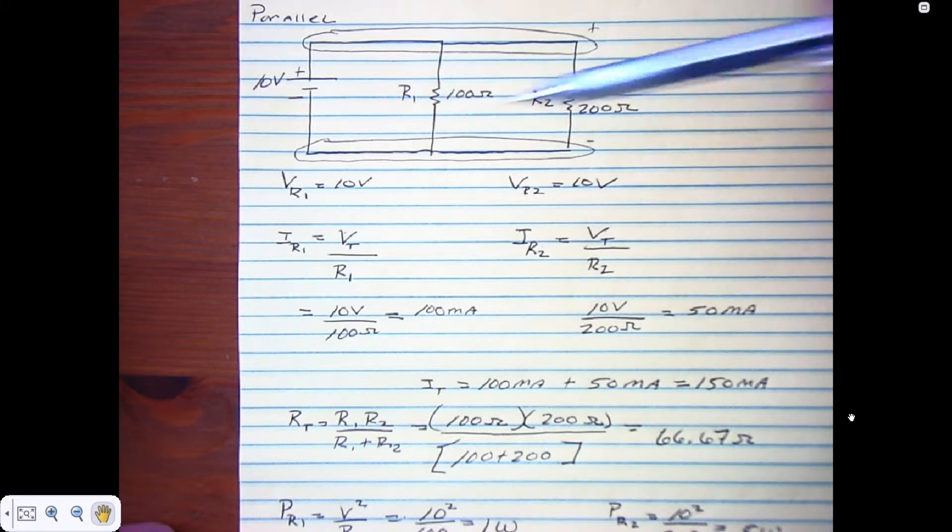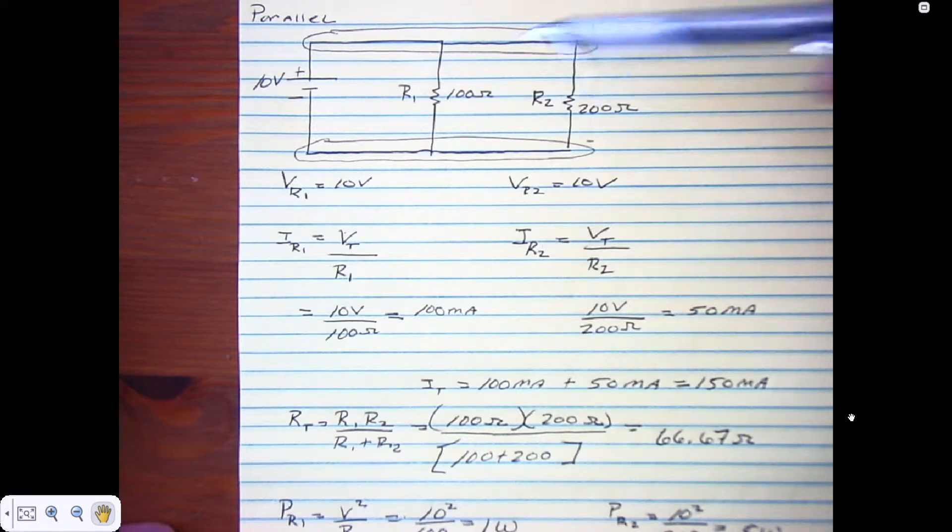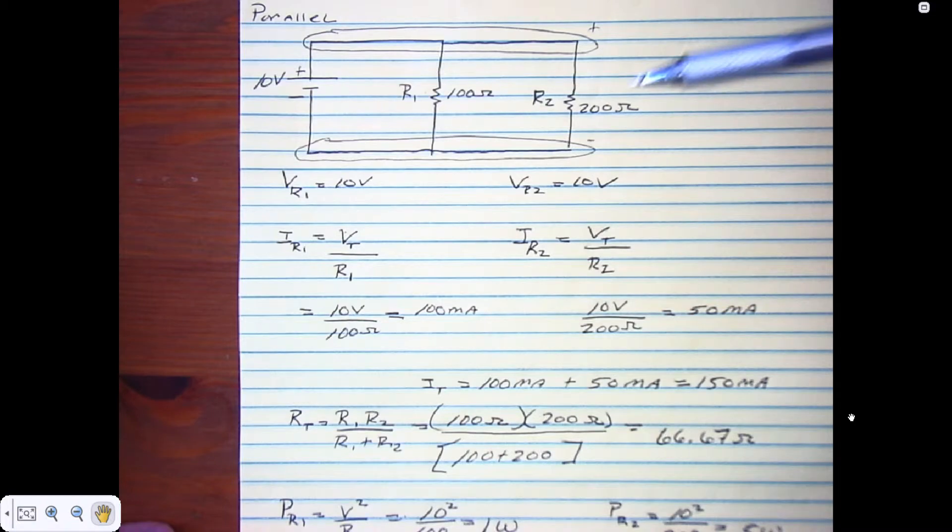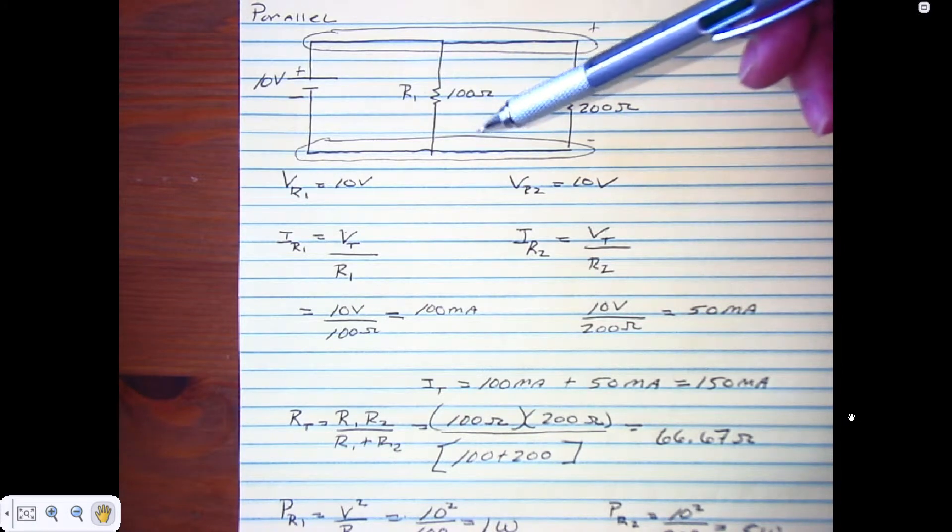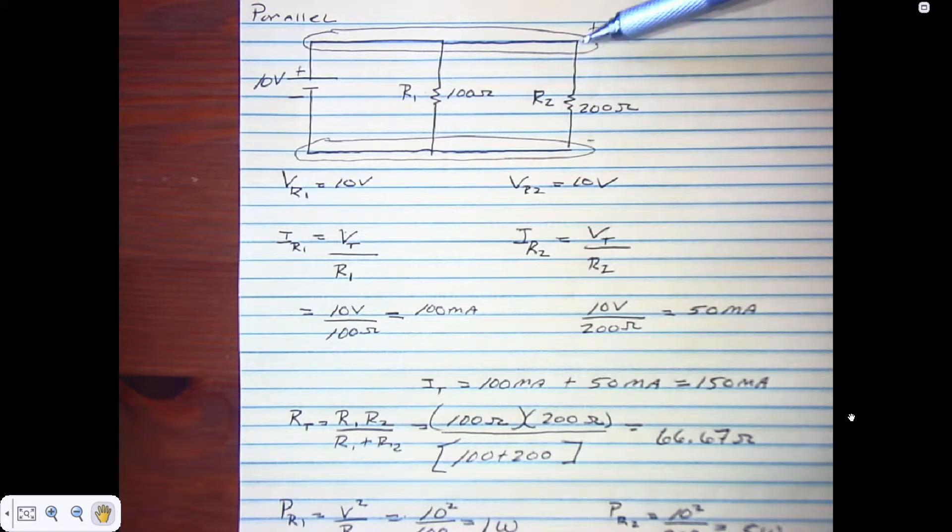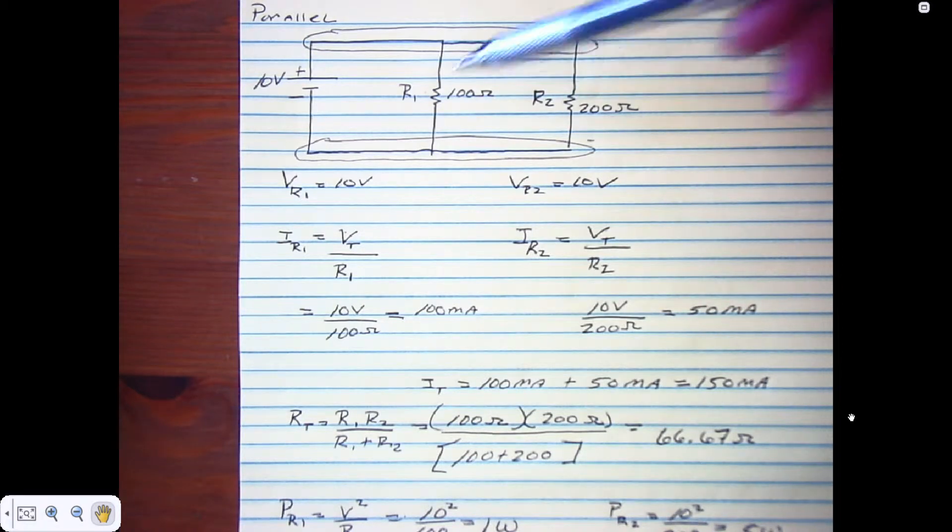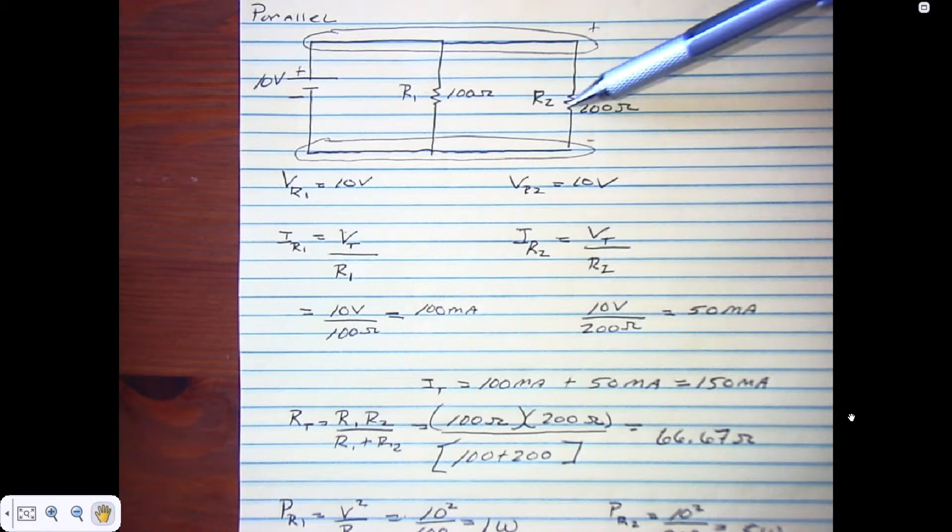As you add loads, you're adding current. If you have more current, you're adding more power, and adding more power you spend more money. This parallel circuit is commonly used in industrial, commercial, or residential settings, and these loads could be anything from lights to air conditioners.